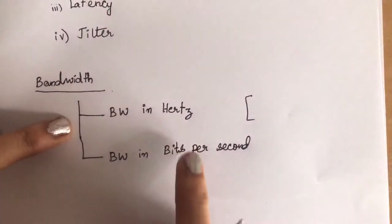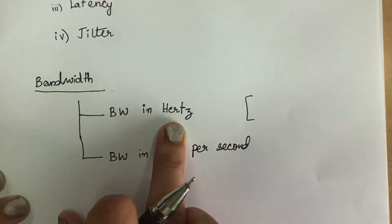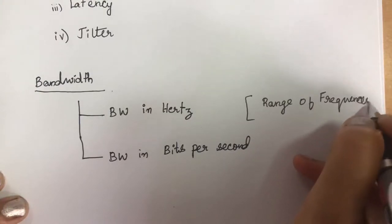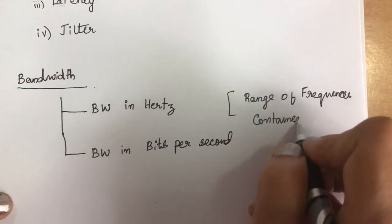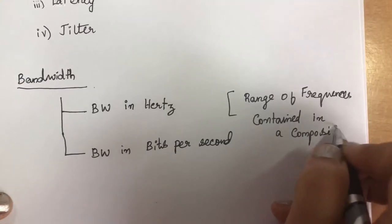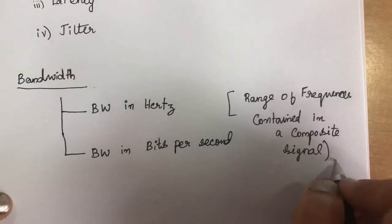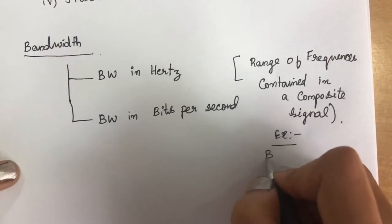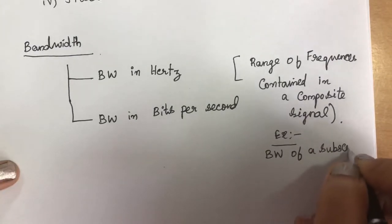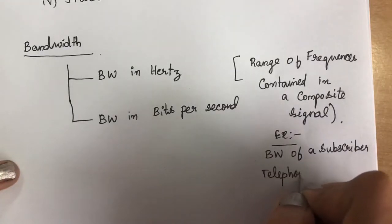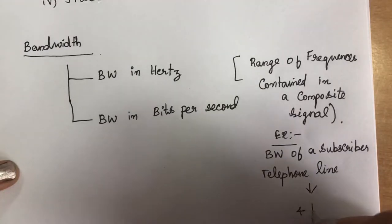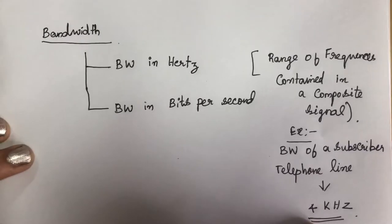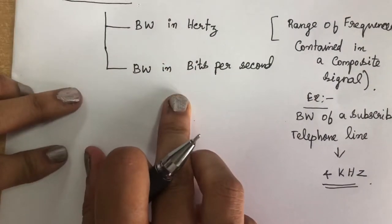We can define bandwidth in hertz or in bits per second. For example, the bandwidth of a subscriber telephone line is 4 kilohertz. That means 4 kilohertz is the range of frequency that channel can pass — that is bandwidth in hertz.